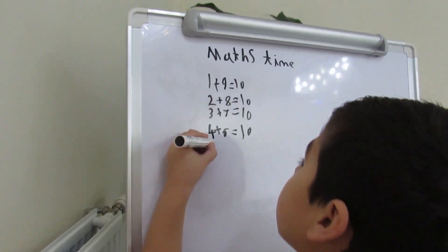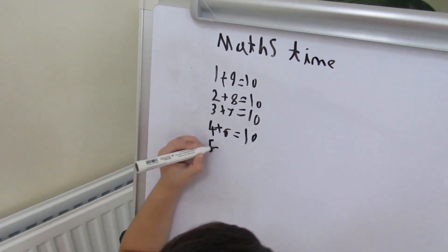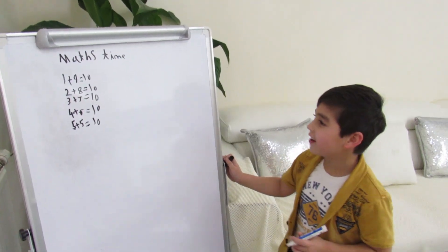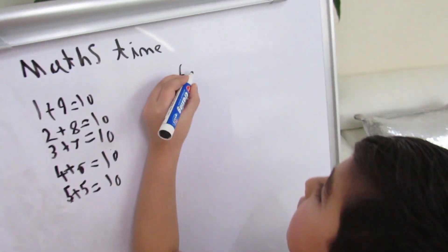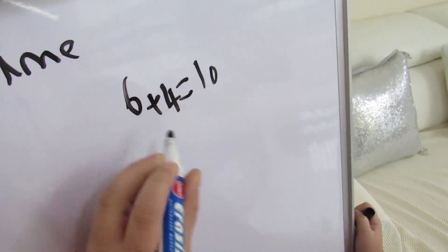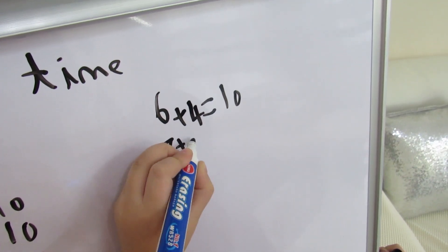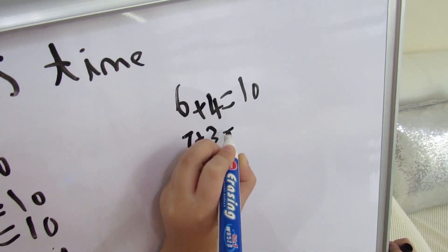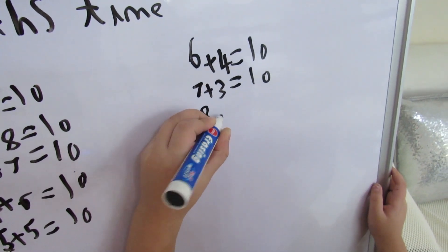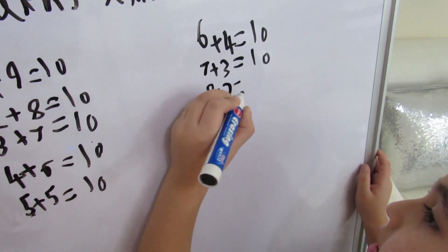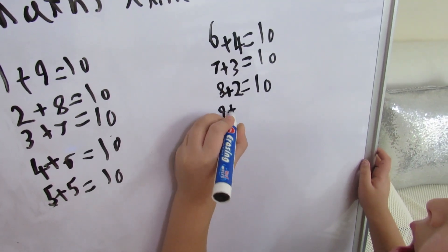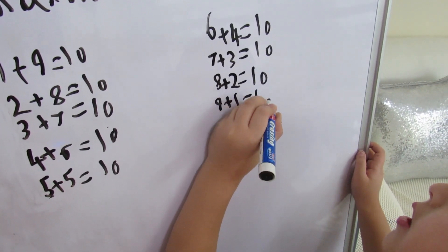The fifth one is five plus five equals ten. Now we're going to do the other half. Six plus four equals ten. Seven plus three equals ten. Eight plus two equals ten. Nine plus one equals ten.